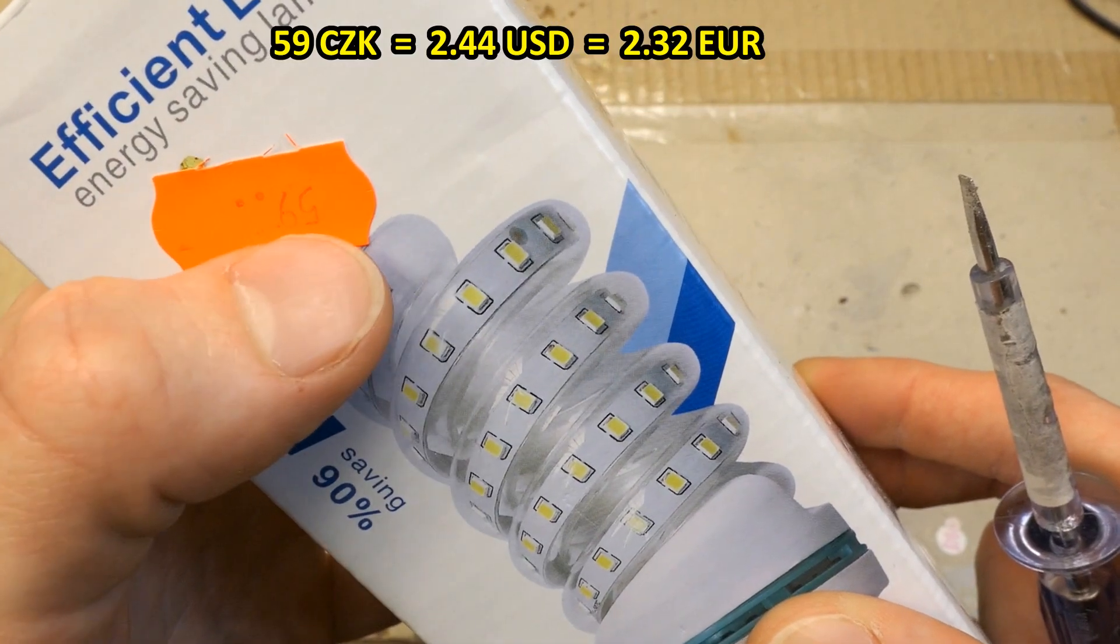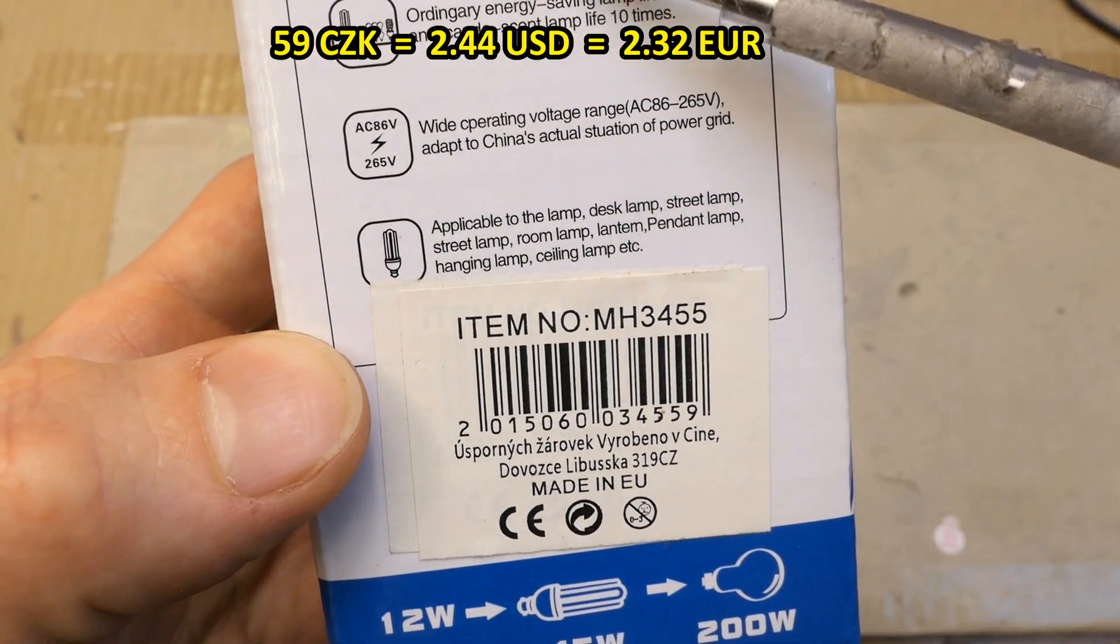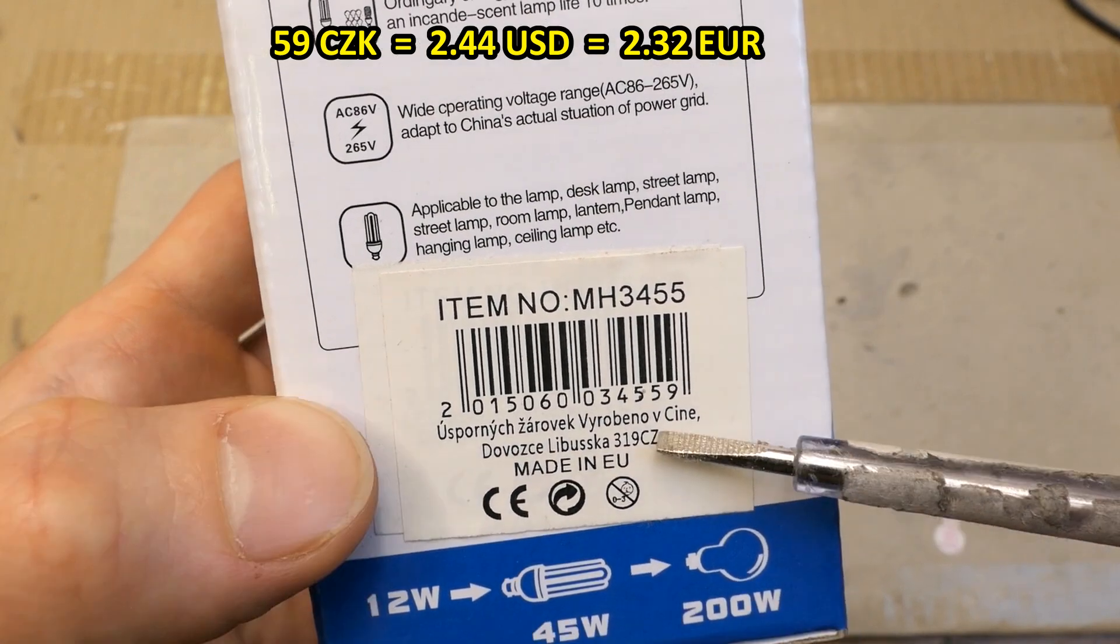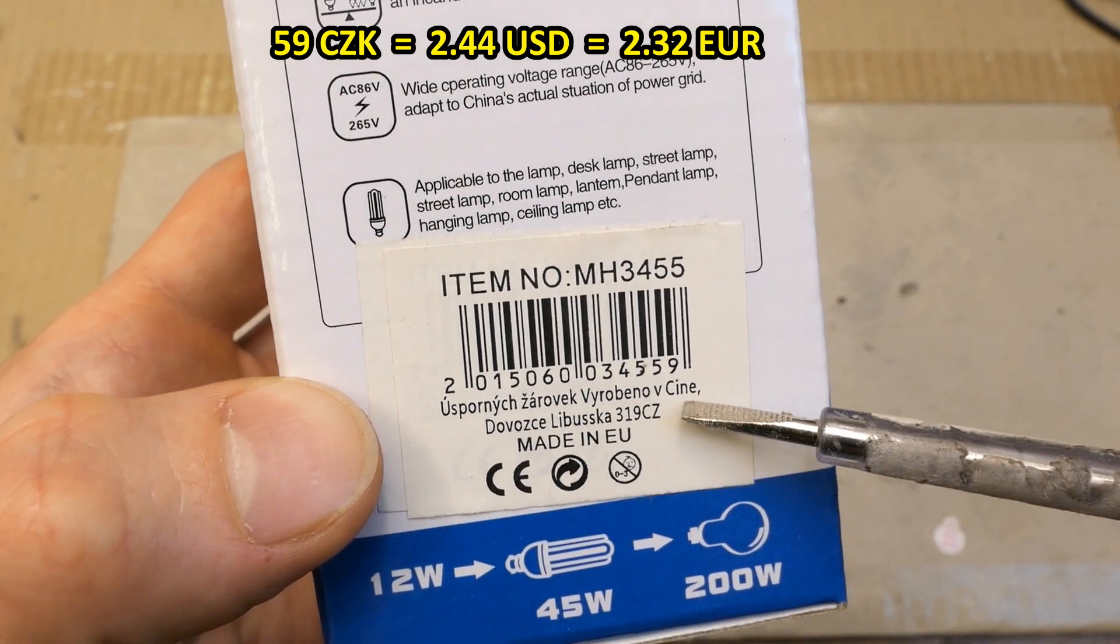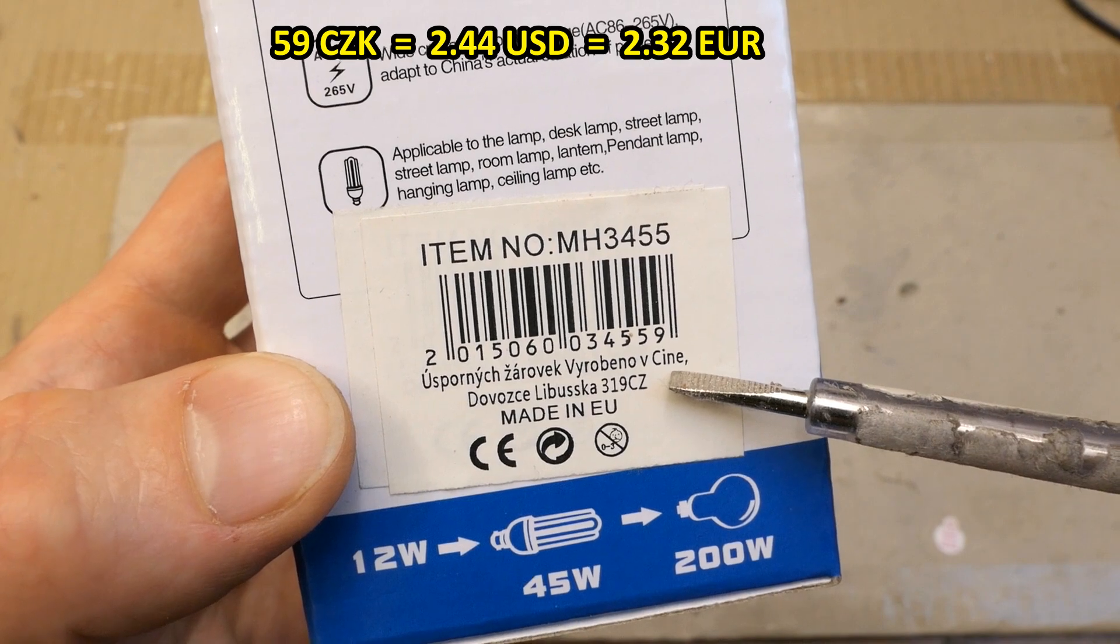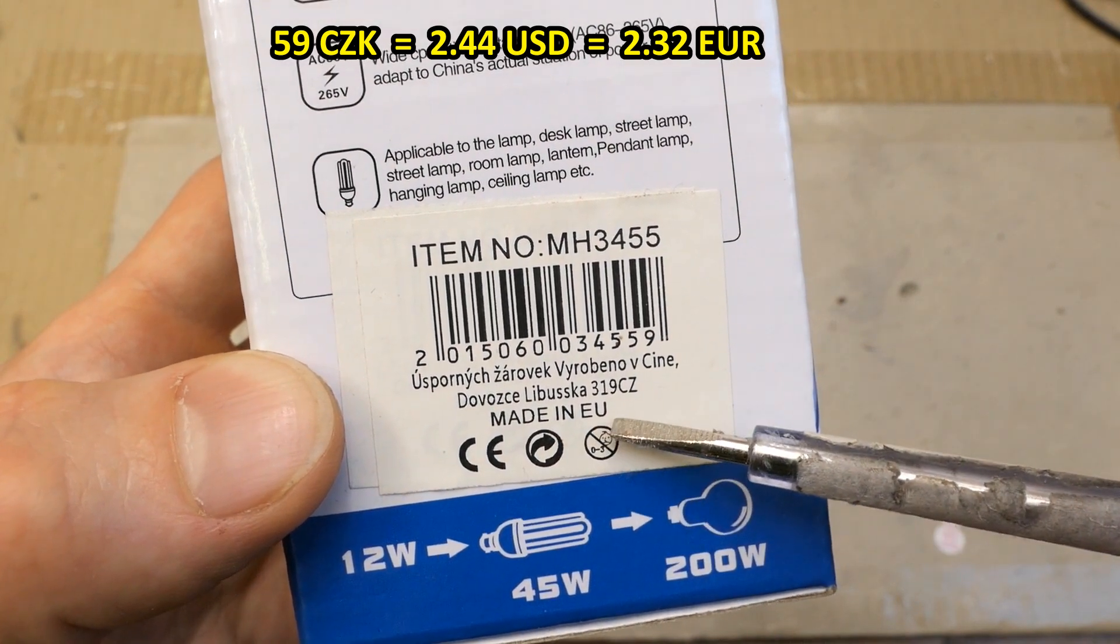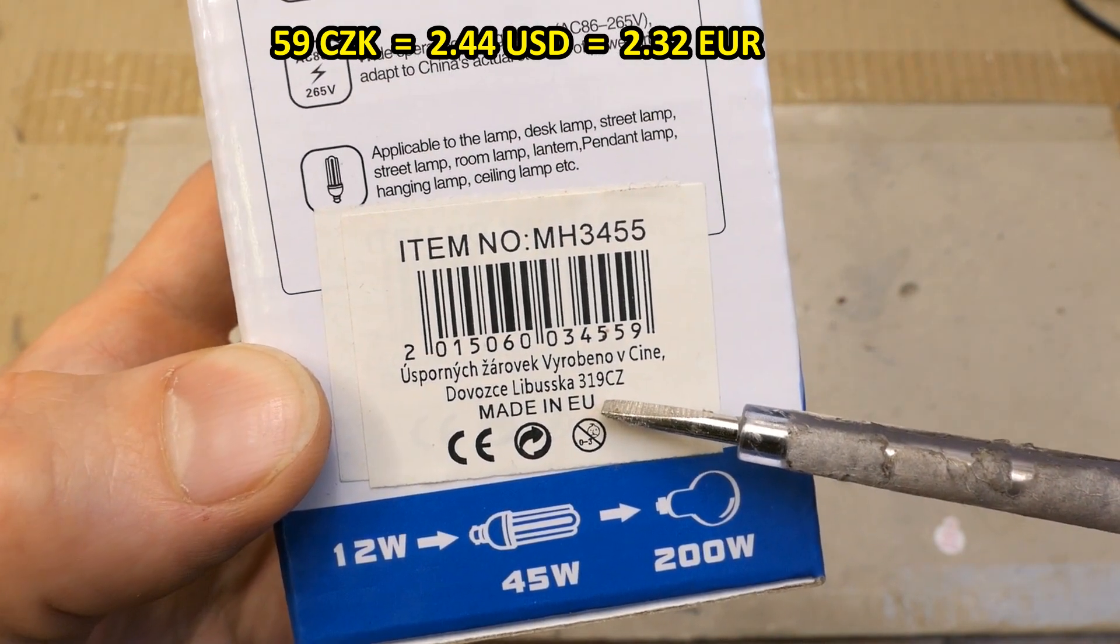I guess the price is in Czech korunas here and it's all in English but this is in Czech. But of course translated with errors, probably using Google translator. And made in EU? What the hell? I'm sure it's not.